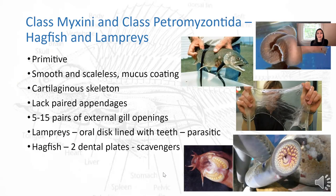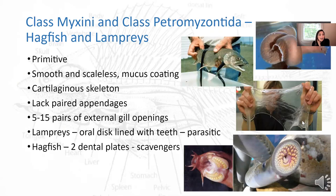First, the hagfish and lampreys — the jawless fish. There are two classes: Myxini and Petromyzontida. These are primitive fish. They're smooth and scaleless. They have a mucus coating — the hagfish mucus coating is actually being studied widely for uses like a substitute for lycra, and it was being studied for use in bulletproof vests. Pretty interesting byproduct of the jawless fish.